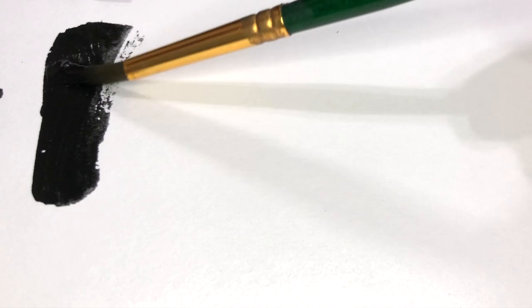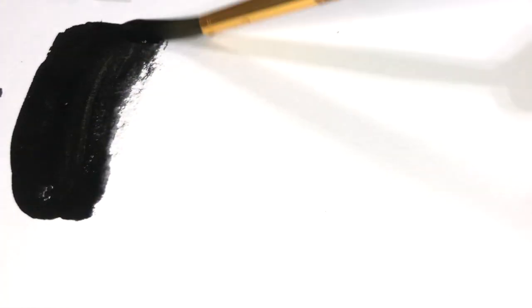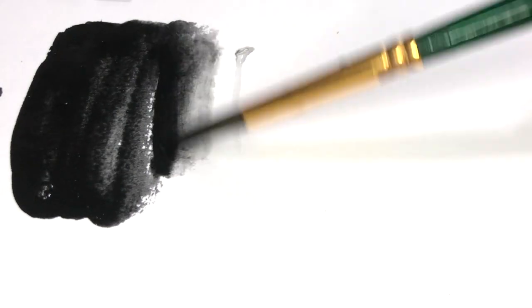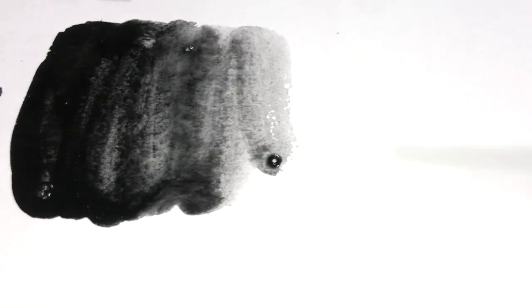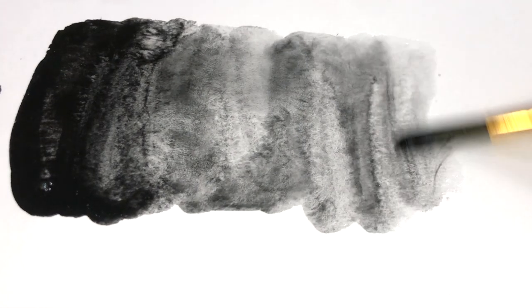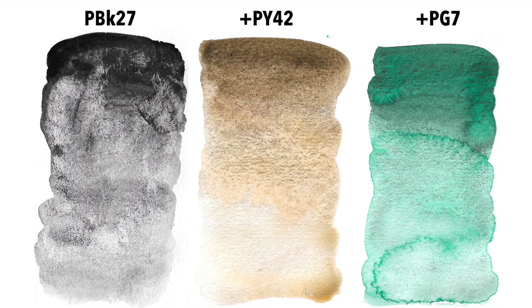Last but not least, Cobalt Black PBK27. Mijello doesn't have an Oxide Black PBK11 in their range, but this Cobalt Black is pretty much the same thing! And again, granulation is apparent on its own, and it mixes so gorgeous.